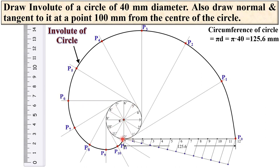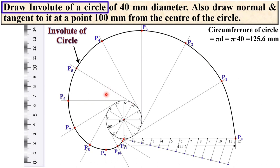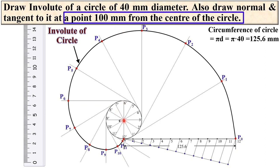It is very simple: to get the involute of a circle, the string is being unwound or wound on the circumference of the circle, but each and every time it must remain a tight string. The end point of this tight string generates the involute of circle. So far we have completed the first task — drawing the involute of circle. Now the second task is to draw the normal and tangent at a point 100 mm from the center of the circle.